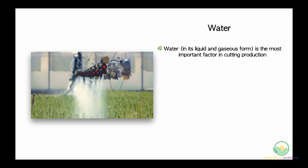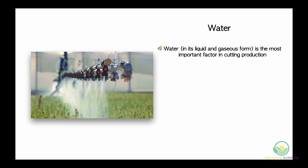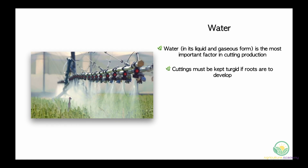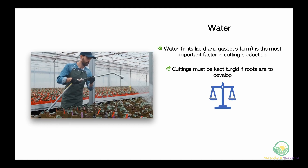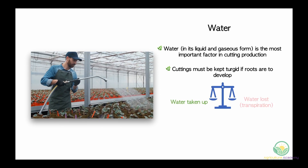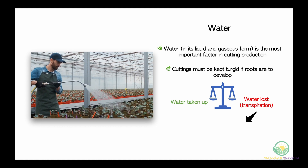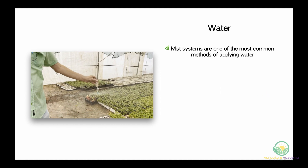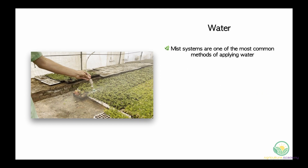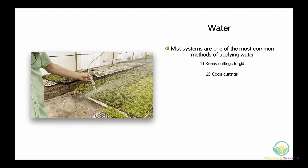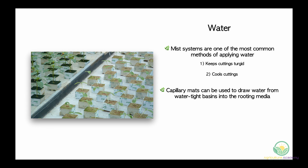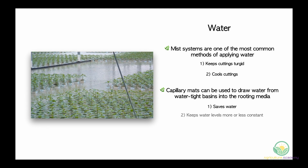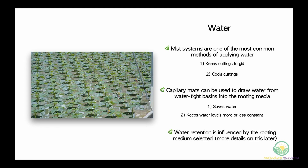Water, both in its liquid form and as humidity or mist, is possibly the most important factor in cutting production. Keeping cuttings turgid is a prerequisite for root development. A balance must be maintained between the water taken up by the cuttings and that lost through transpiration. Increasing humidity in the propagation unit and lowering the surface area of the leaves will help minimize water loss. Misting systems are one of the most common methods of applying water, not only to keep the cuttings turgid but to cool them as well. Capillary mats are used to draw water from watertight basins into the rooting media — this method not only saves water but keeps more or less constant moisture levels in the rooting medium. Water retention will be influenced by the rooting medium selected.